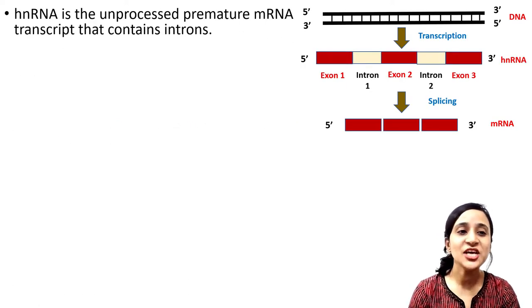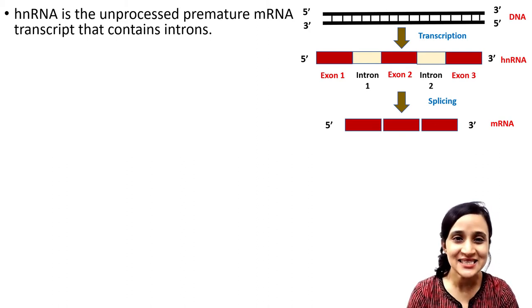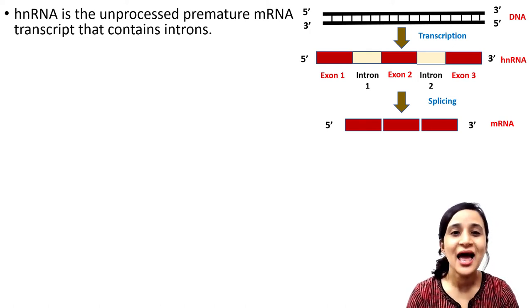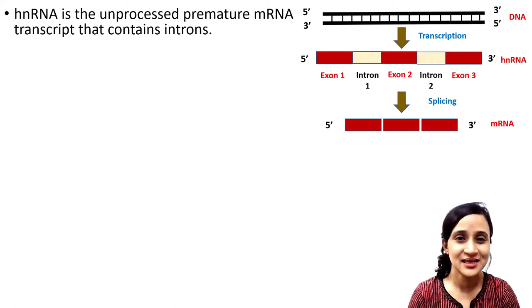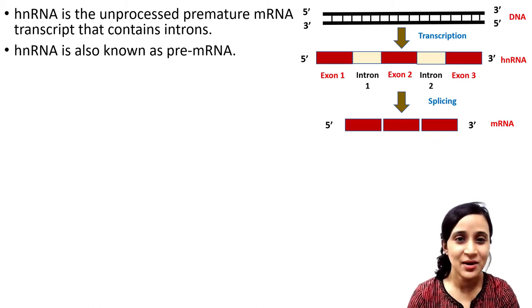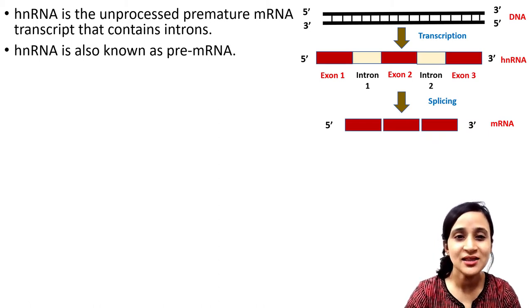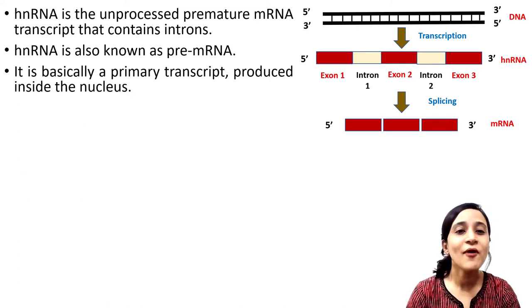hnRNA is the unprocessed premature mRNA transcript that contains introns. So hnRNA contains introns along with the exons — it is the premature mRNA before processing. hnRNA is also known as pre-mRNA because it is not the matured mRNA; it is basically a primary transcript.